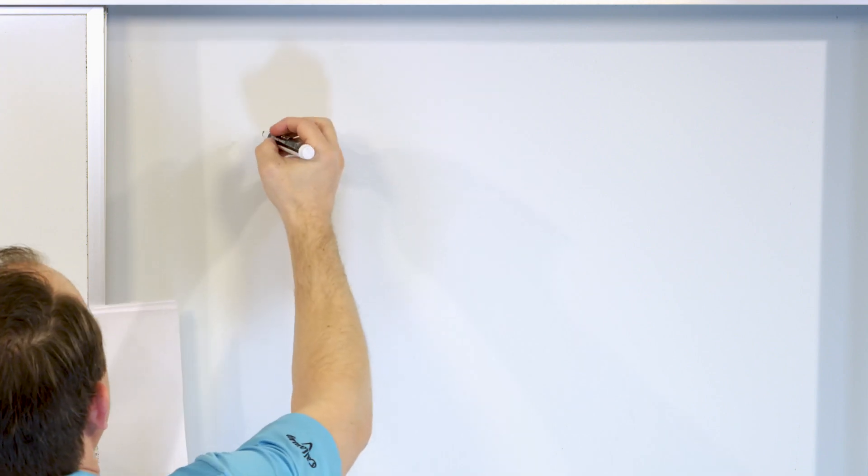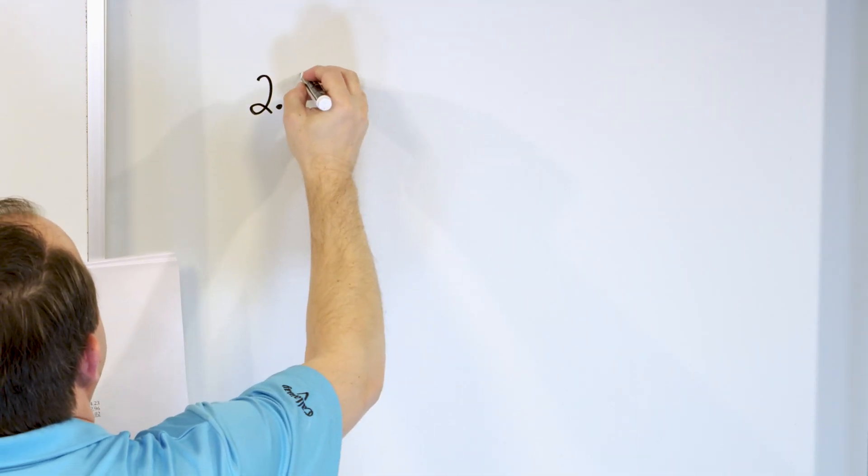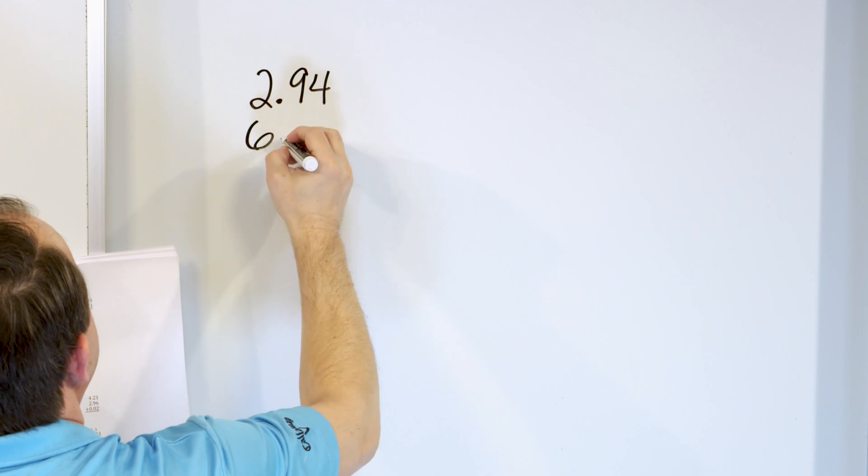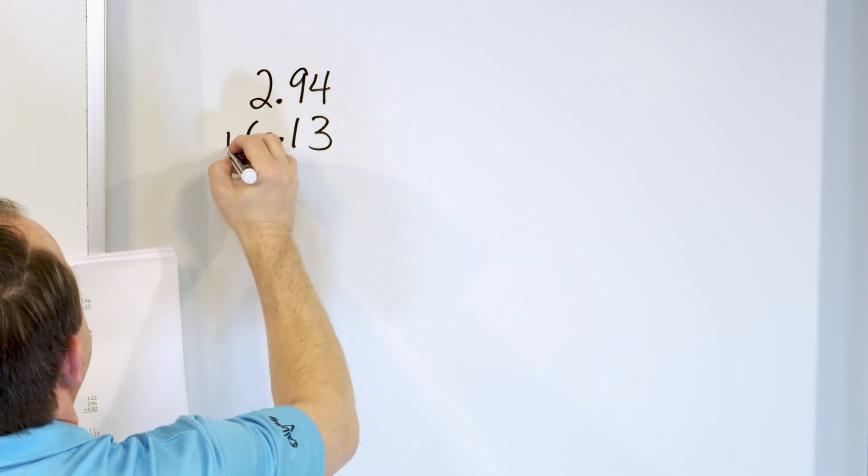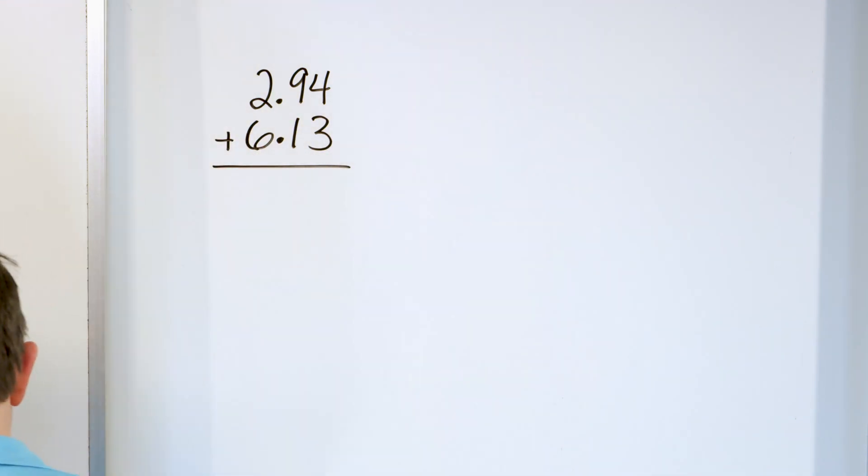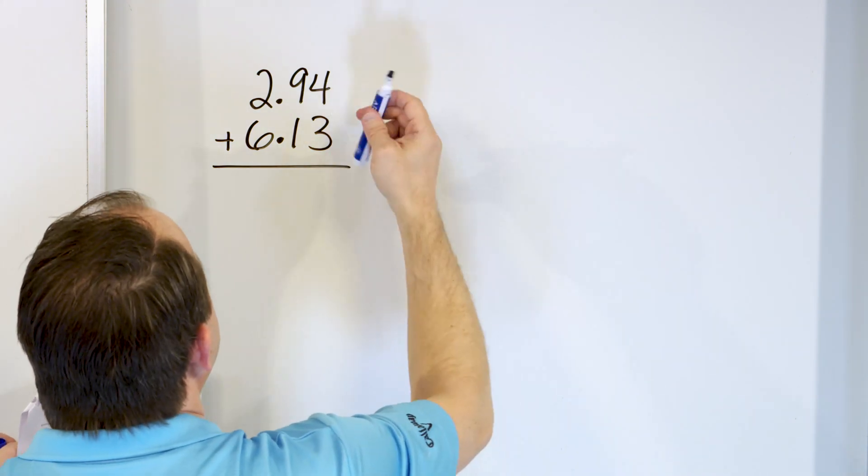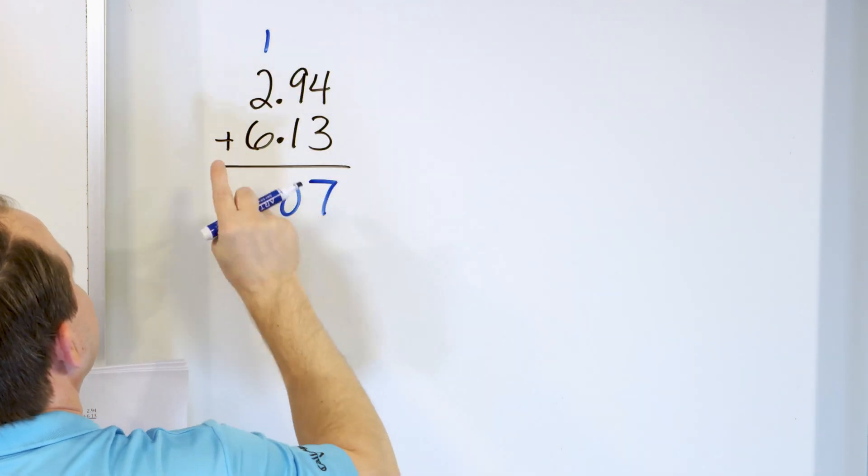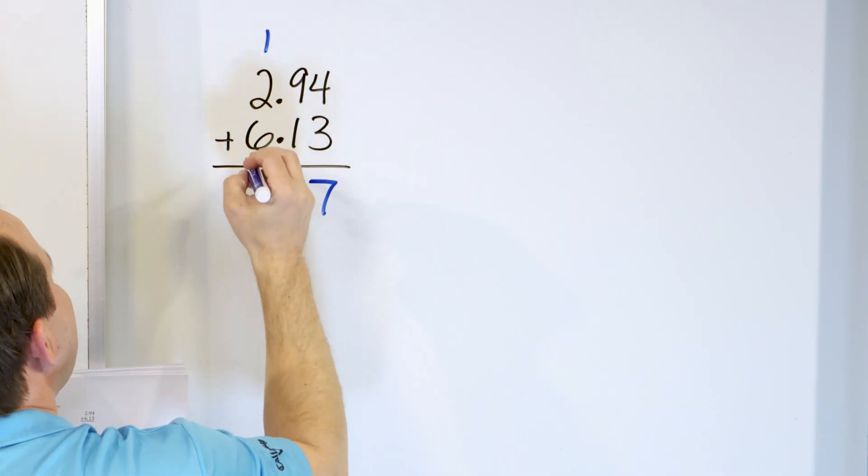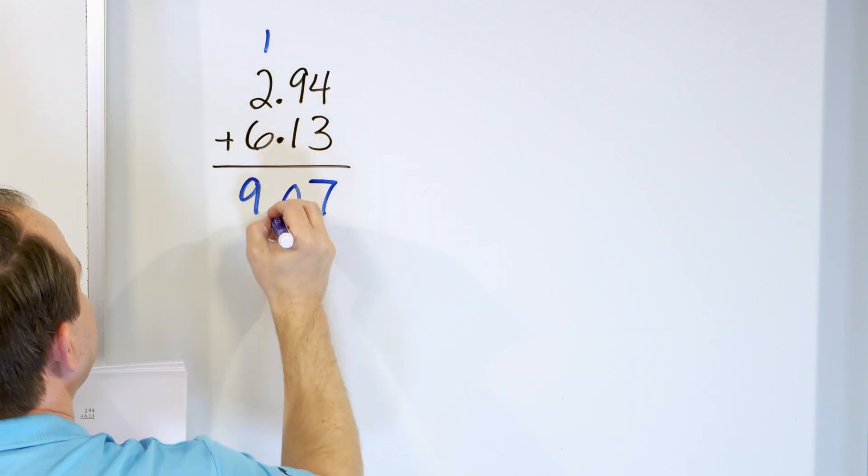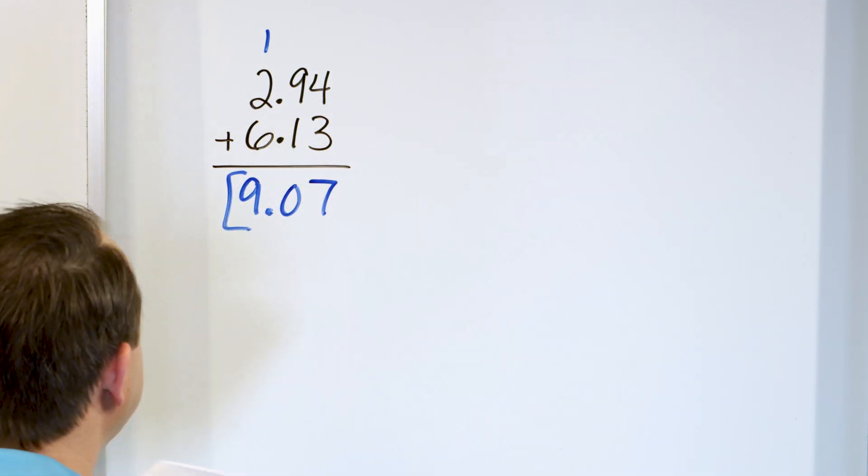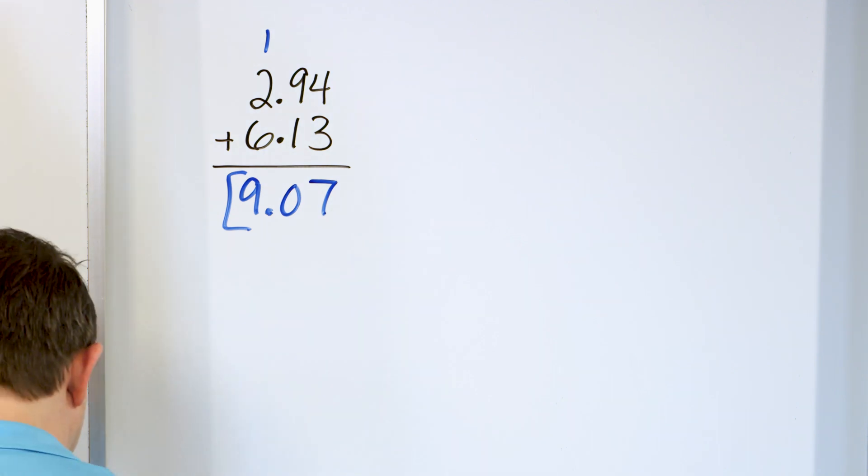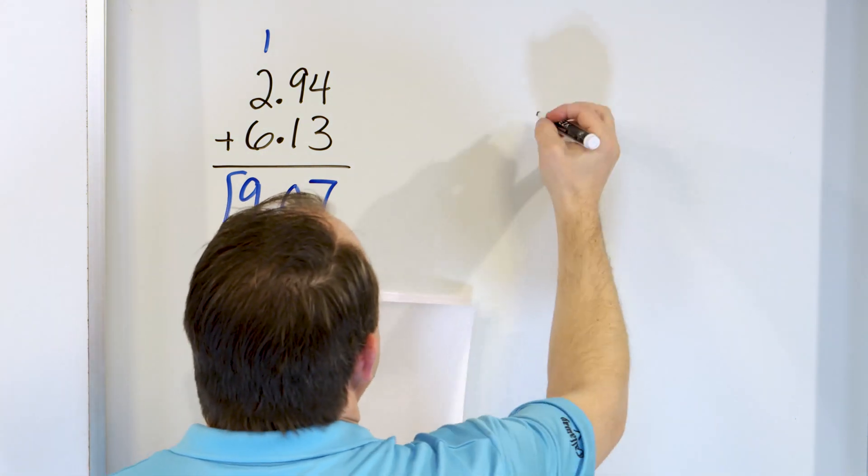Only three more problems in this lesson. What about 2.94? And we'll add to that 6.13. What do we do? Right column. 4, 5, 6, 7. 9 plus 1 is 10. Carry a 1 right here. 6, 7, 8, 9 goes right here. And the decimal just flows right down into 9.07.